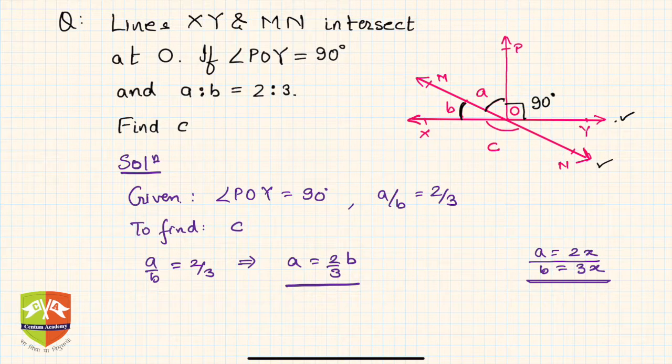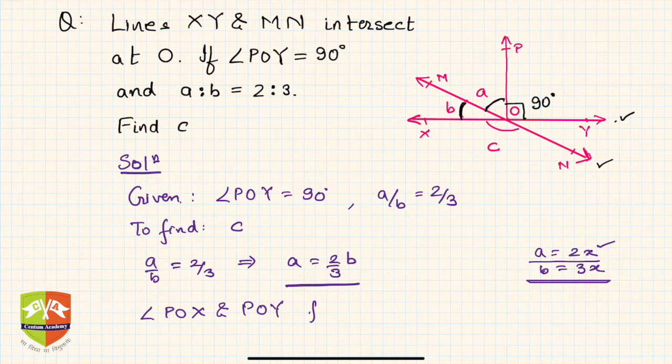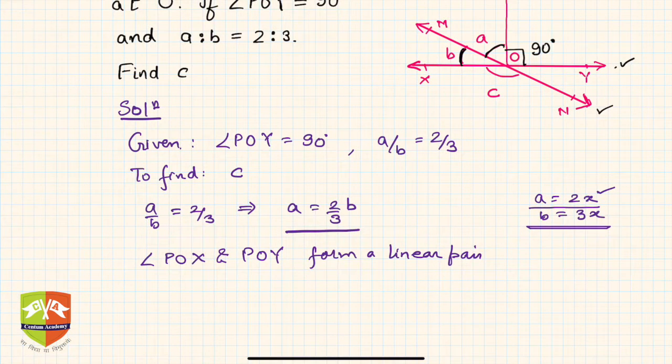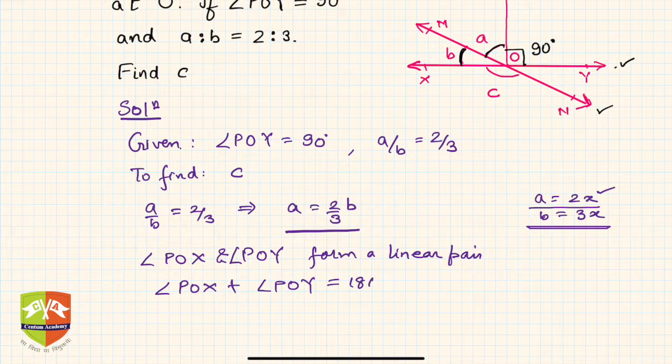Now angle POX and angle POY form a linear pair. What does it mean? It means angle POX plus angle POY is 180 degrees. That is what we have learned, right?